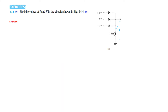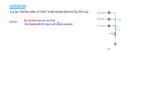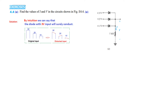Now we'll solve problem 4.4E. Here we have to find the current I and the voltage V across the output terminal. By intuition we can say that the diode with the 3-volt input will surely conduct. These are the inputs: 1 volt, 2 volt, and 3 volt.